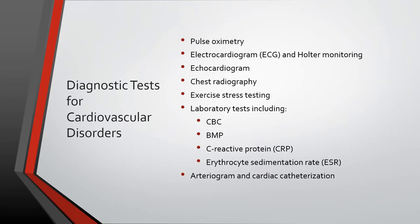Diagnostic tests for cardiovascular disorders include pulse oximetry to help determine oxygen requirements; electrocardiogram or ECG and Holter monitoring to detect heart rhythm and chamber overload; echocardiogram, a non-invasive ultrasound to help diagnose structural defects; chest radiography to identify abnormalities of the lungs, heart, and other chest structures; exercise stress testing to quantify exercise tolerance and provoke symptoms or arrhythmias. Labs include CBC, BMP, CRP, and ESR. Arteriogram and cardiac catheterization observe blood flow and detect lesions, and the catheter can be used to remove any plaques noted.